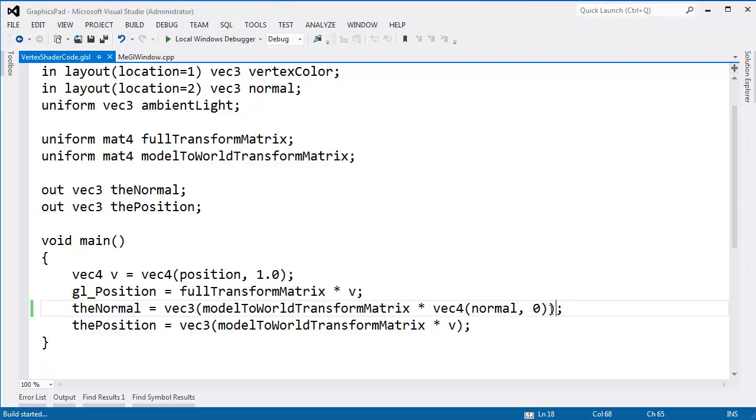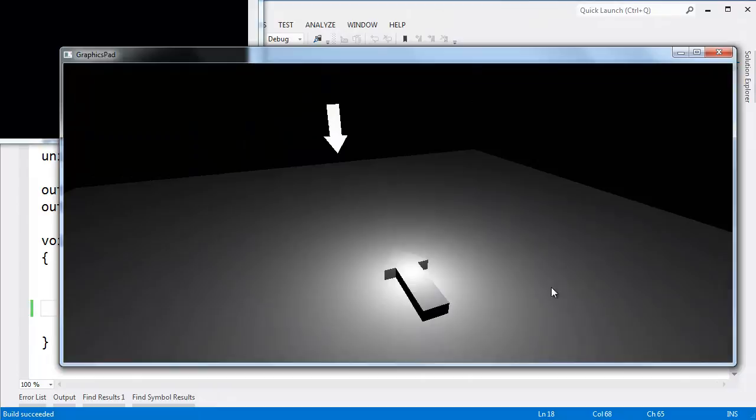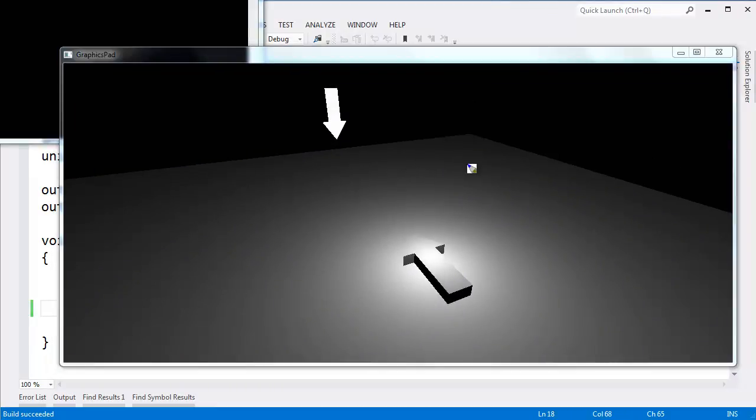There you go. Control F5, build that, run that. You can see our lighting looks correct. If my light bulb is right here, which it is. Let me get a different color. My light bulb's right here, which it is.